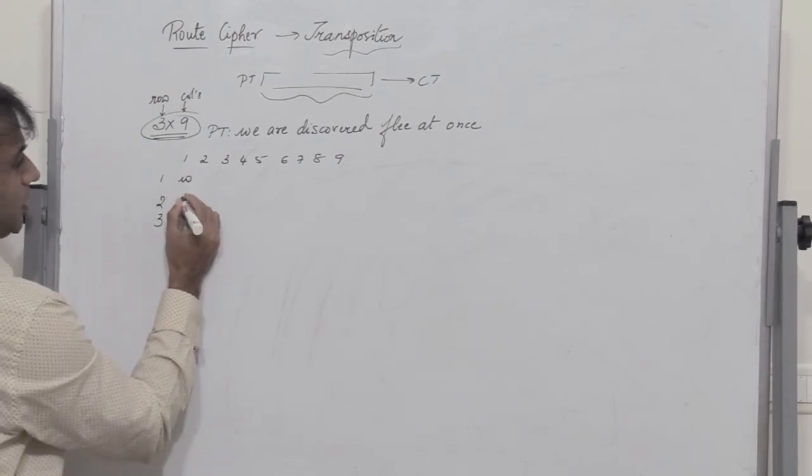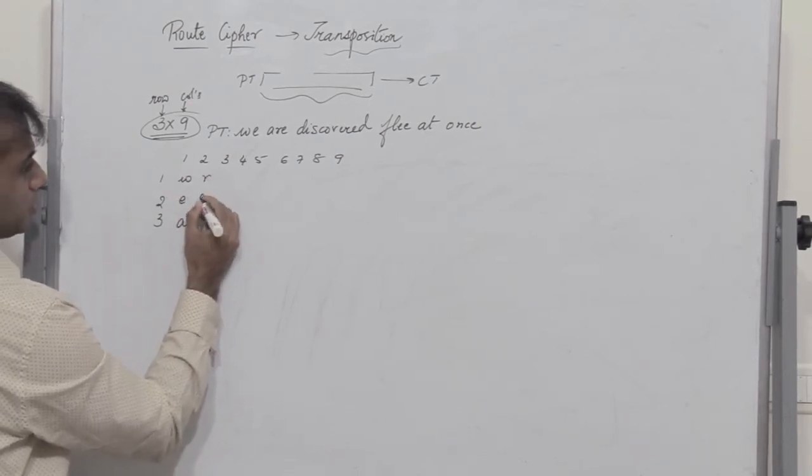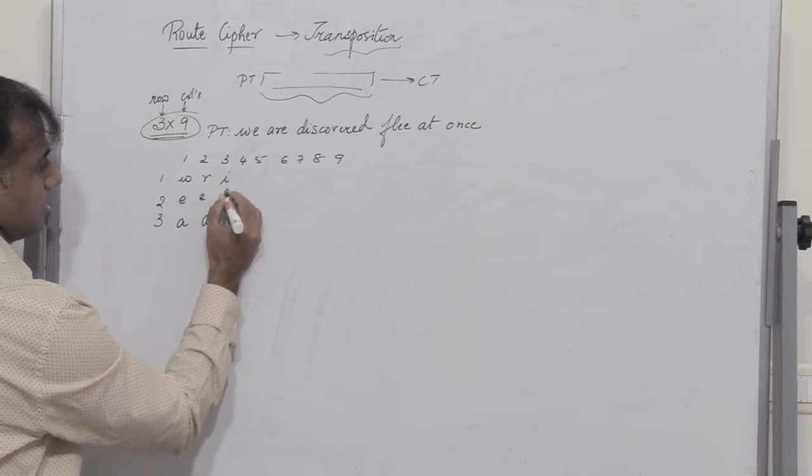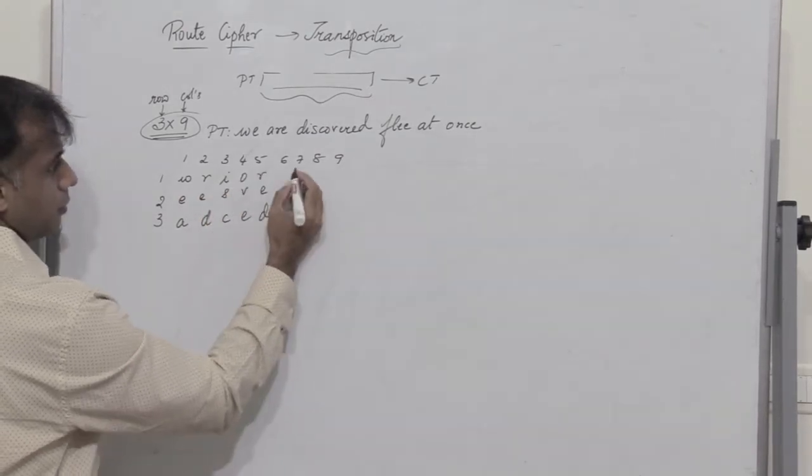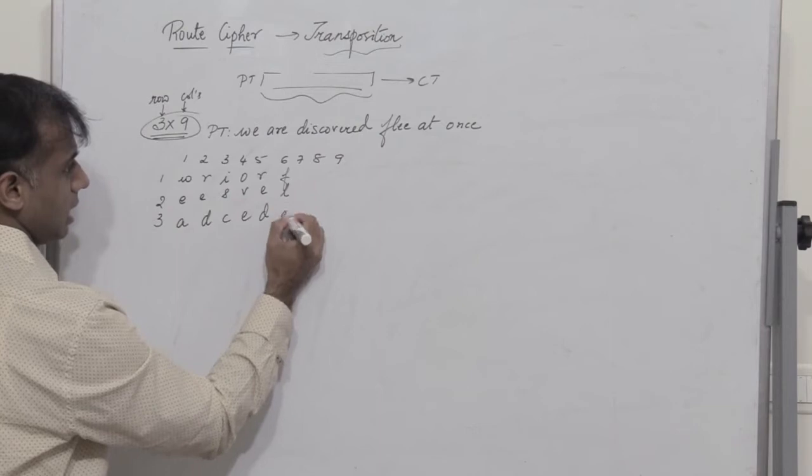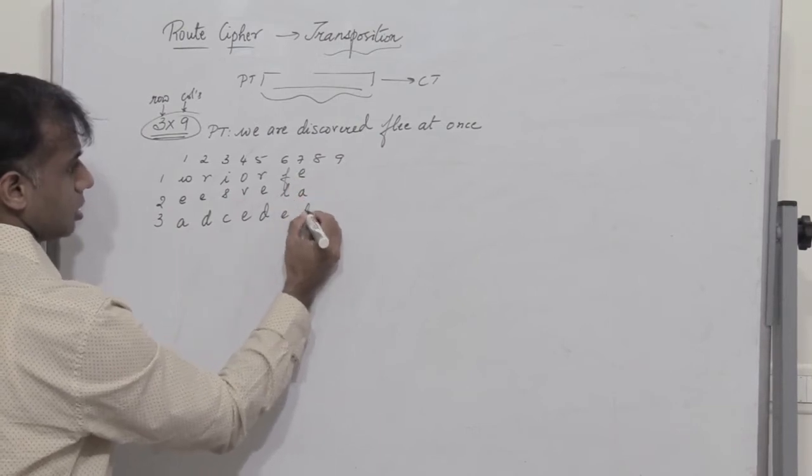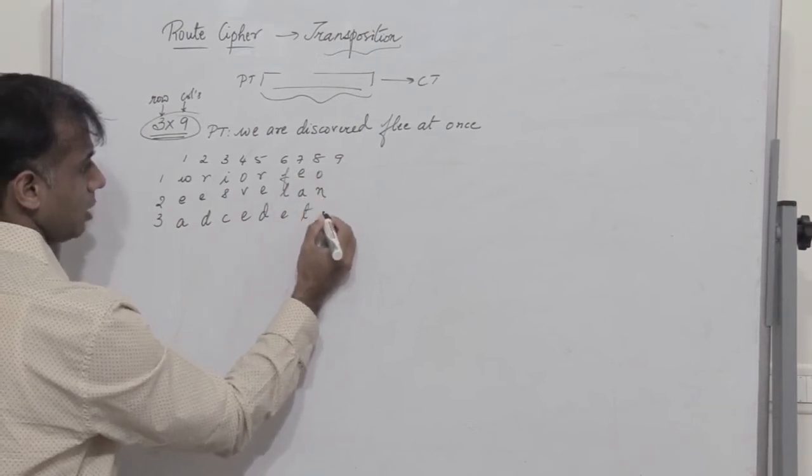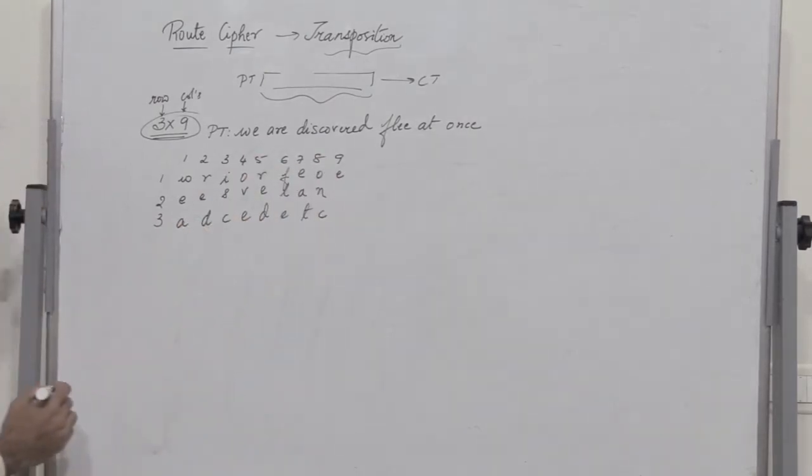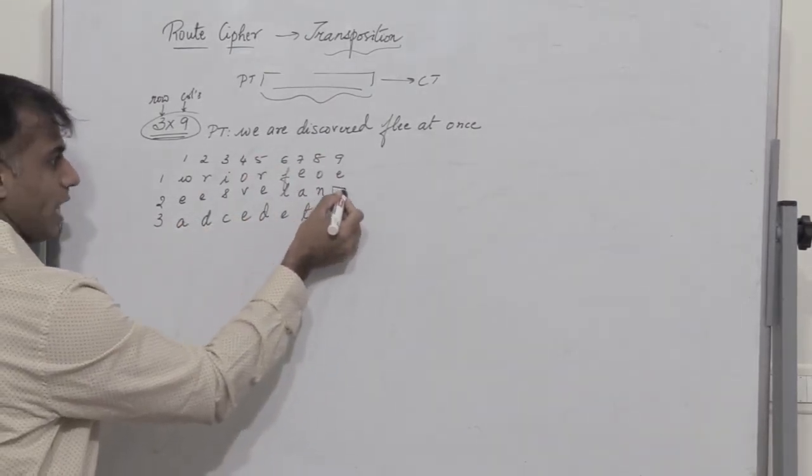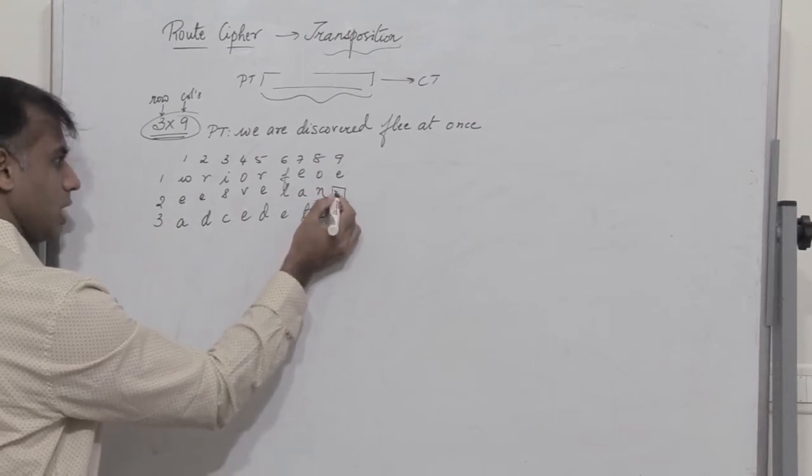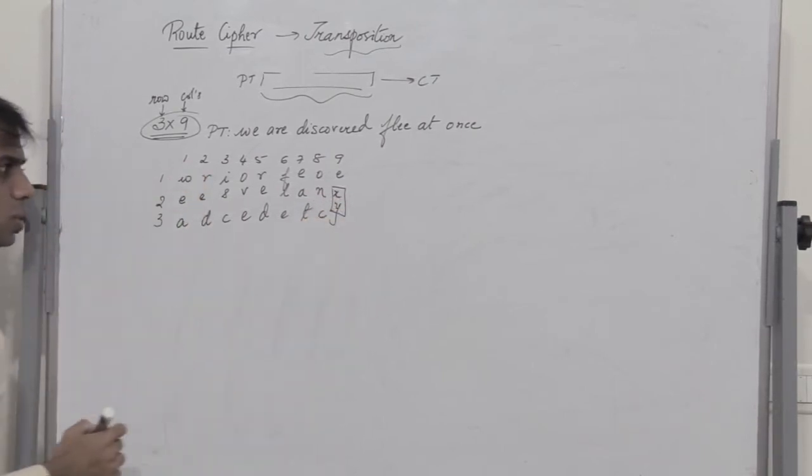So we write we are discover flee F-L-E-E at once O-N-C-E. So now there are 2 gaps. I can write X and Y. So we can choose any 2 alphabets and complete the entire grid.